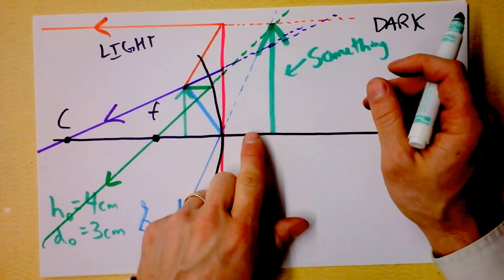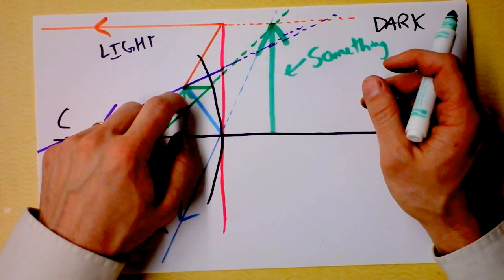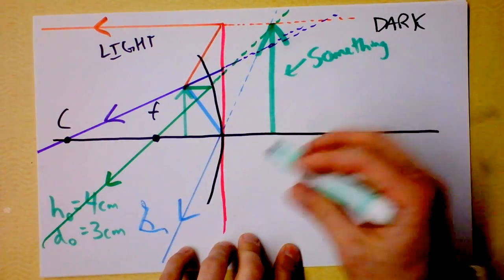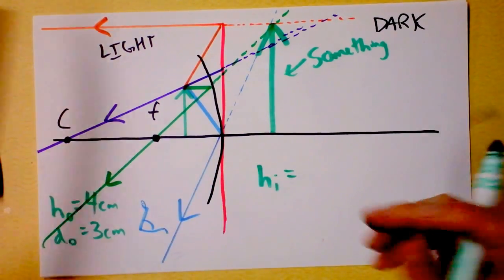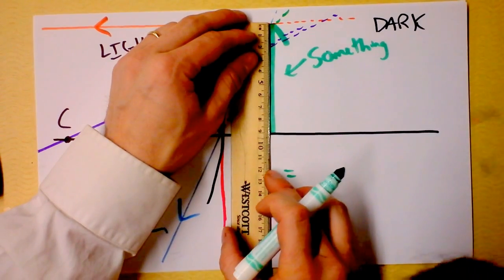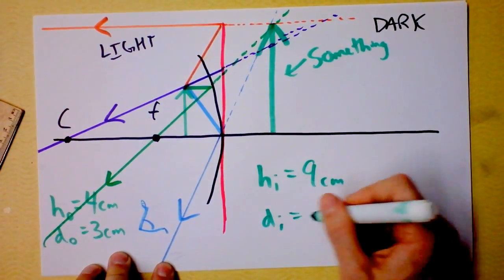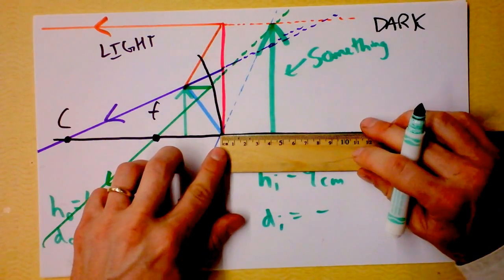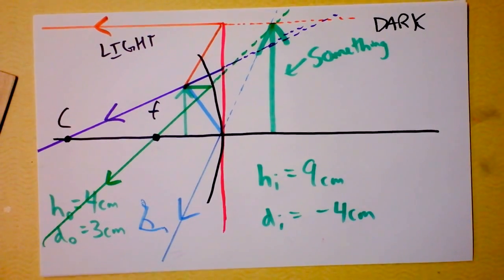That's how we can use this kind of mirror as a magnifier. When I look at it, I see not the object but the image as even bigger than it actually is. The height of the image is positive — it's upright — and where the object was 4 centimeters, the image is actually 9 centimeters. The distance of the image is about negative 4 centimeters — it's on the wrong side of the mirror.